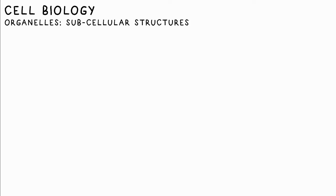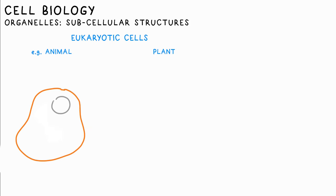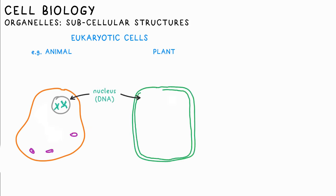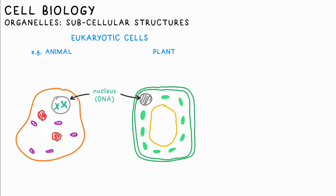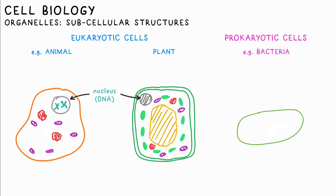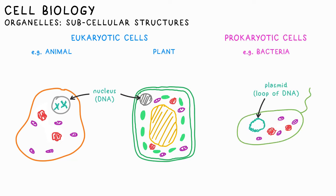We put cells into two main groups. Eukaryotic cells have a nucleus in which their DNA is found — that's your plant and animal cells for example. Prokaryotic cells don't have a nucleus and their DNA is found in a ring called a plasmid. Both eukaryotic and prokaryotic cells contain similar organelles or subcellular structures.